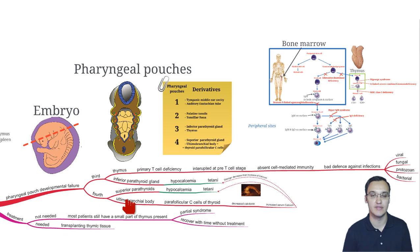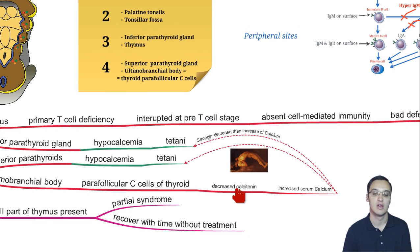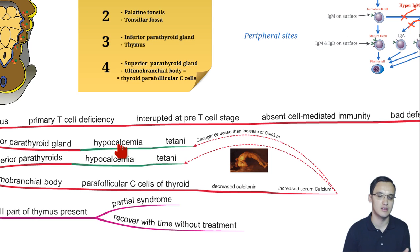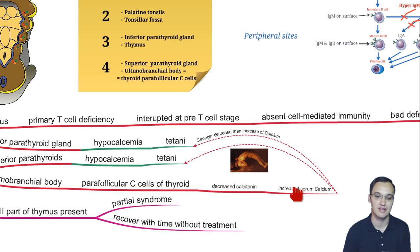The fourth pharyngeal pouch also gives rise to something called the ultimobranchial body, from which the parafollicular C cells of the thyroid are formed. These cells secrete calcitonin, which decreases calcium in the blood. In our case, we don't have these cells, so we don't have calcitonin, meaning calcium would be increased. However, the net effect is still hypocalcemia and tetany, because the loss of parathyroid function is the stronger effect.